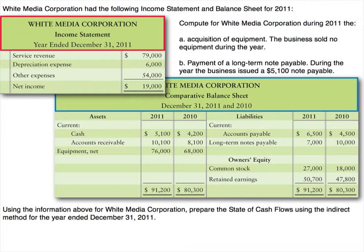We're also given some additional information in letters A and B. We're told there was an acquisition of equipment and the business sold no equipment during the year — so we bought some equipment but didn't sell any. In letter B, there was a payment of a long-term note payable and during the year the business issued a $5,100 note payable, meaning you're getting cash and will owe it in the future. Our objective is to produce a statement of cash flows using the indirect method for the year ended December 31st.